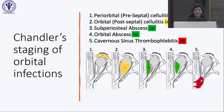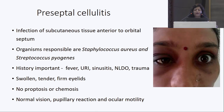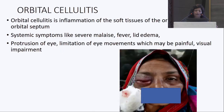The Chandelier staging grades orbital infections into periorbital or preseptal cellulitis, orbital cellulitis, subperiosteal abscess, orbital abscess, or cavernous sinus thrombophlebitis. Preseptal cellulitis is infection of subcutaneous tissue anterior to the orbital septum; causative organisms are mainly Staph aureus and Streptococcus pyogenes. History of fever, URI, sinusitis, NLDO, and trauma are common. Vision is normal and pupillary reaction and ocular motility are normal in preseptal cellulitis.